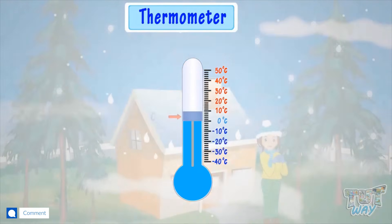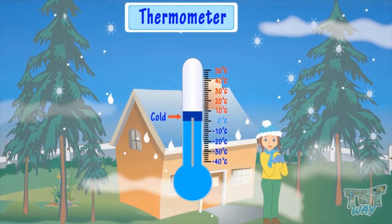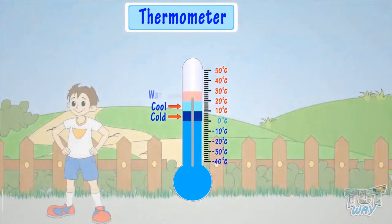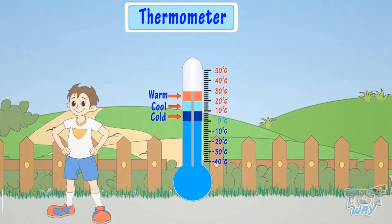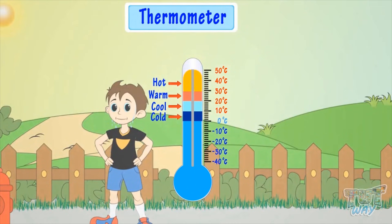Zero to ten degrees Celsius is considered cold. Ten to twenty degrees Celsius is considered cool. Twenty to thirty degrees Celsius is warm. And thirty degrees Celsius and up is hot.